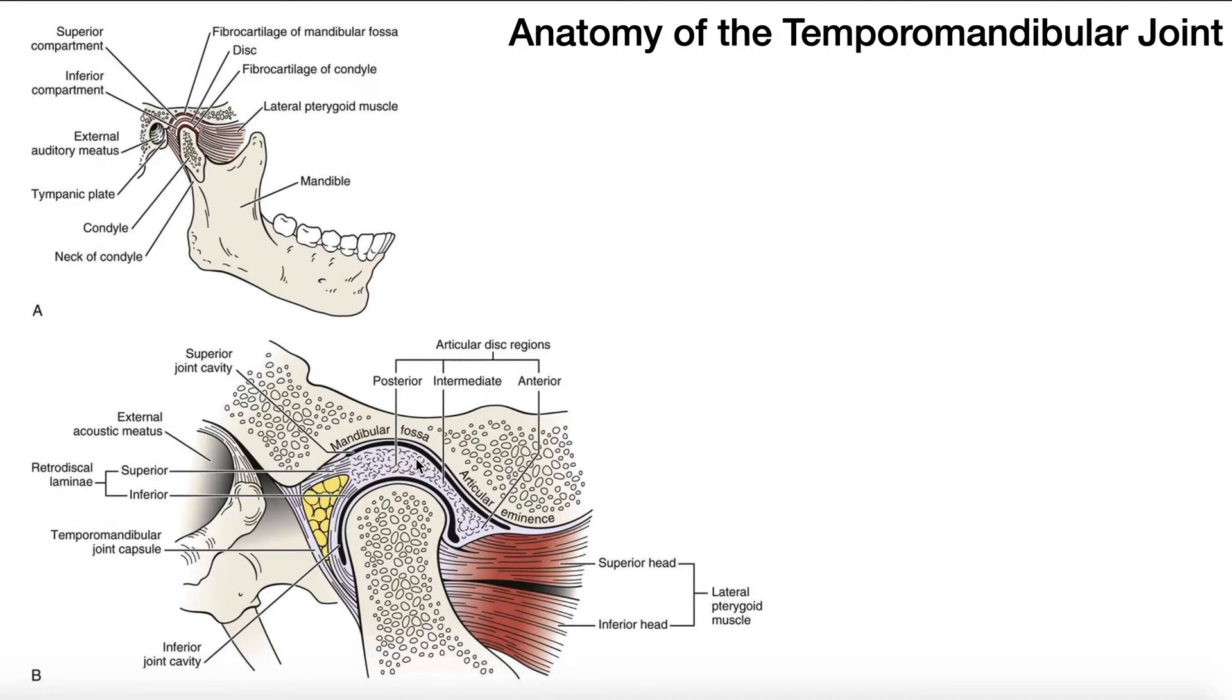But functionally, and we're not going to talk about this until the next video, it's very important for the arthrokinematic movements of the TMJ. It turns out when you open your mouth that this articular disc is tensed and pulled on, and it actually allows for some very bizarre movements of the mandibular condyle. We'll talk about that in more detail in the next video.